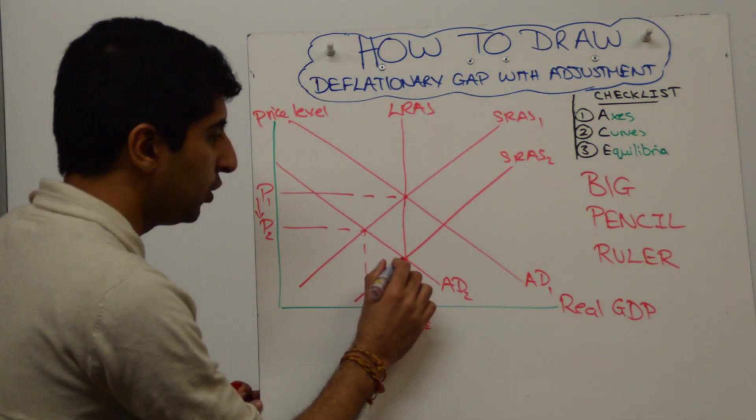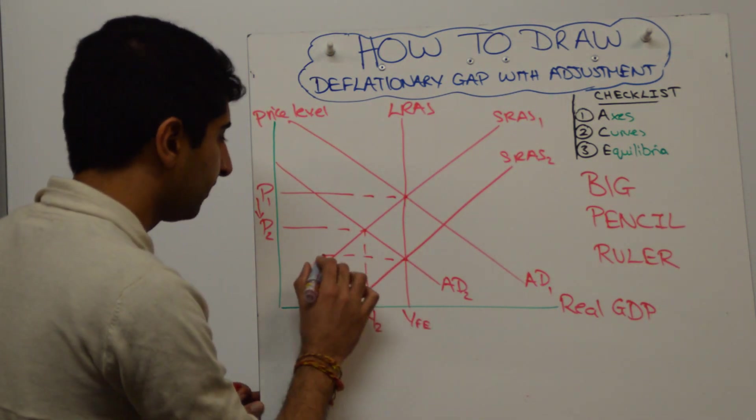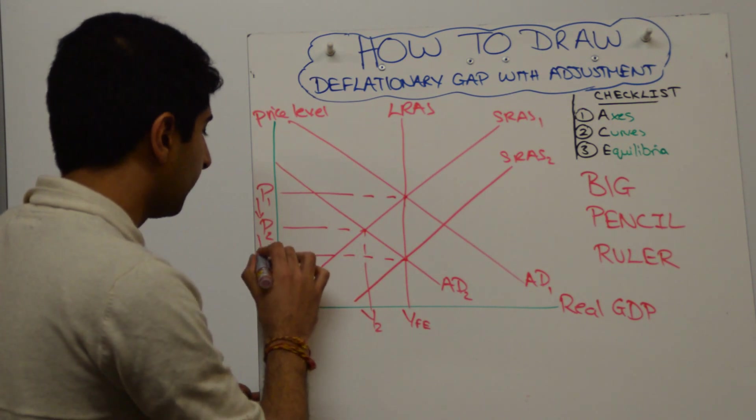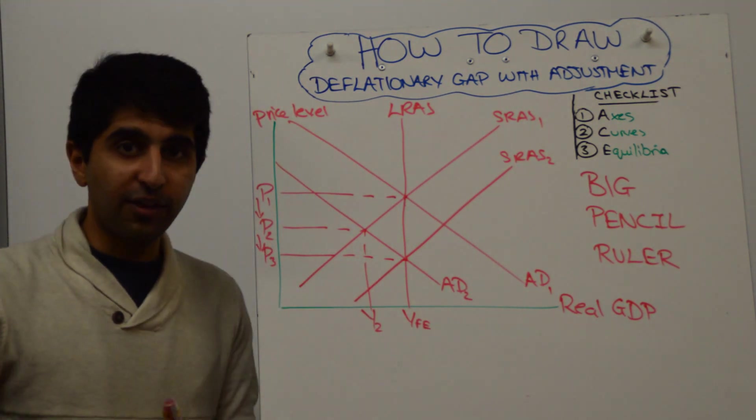And then we have our new equilibrium, which is at YFE, and with a lower price level of P3. Alright, that is done.